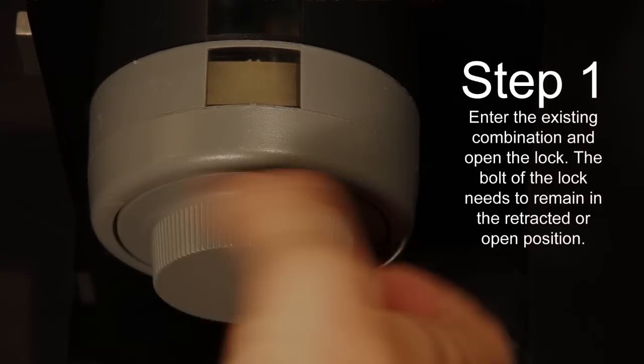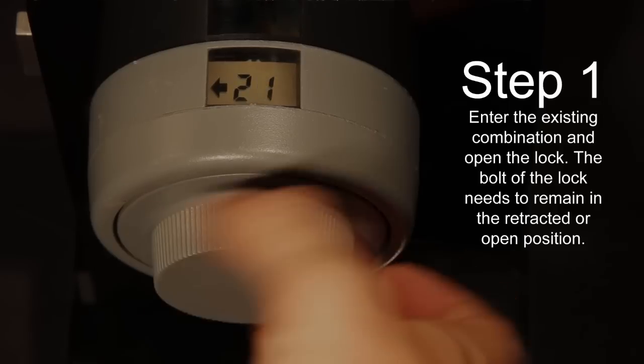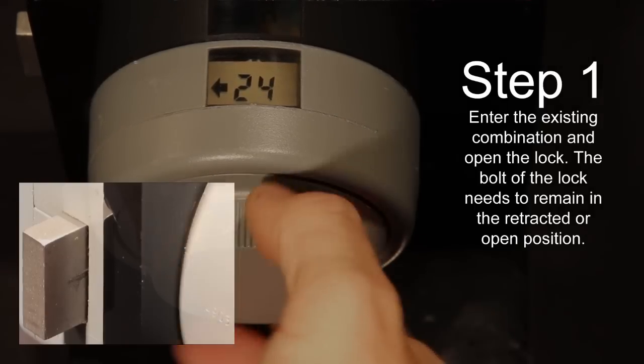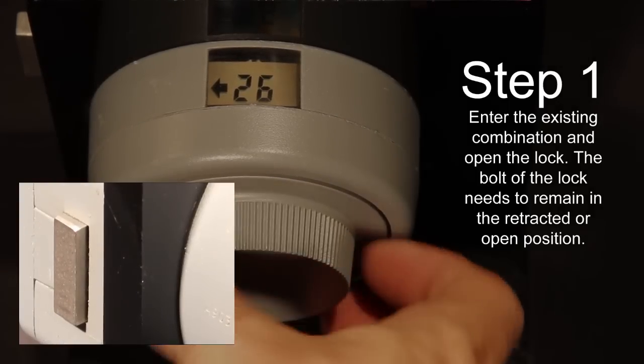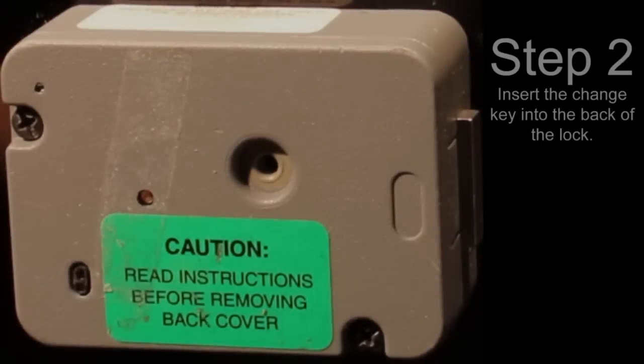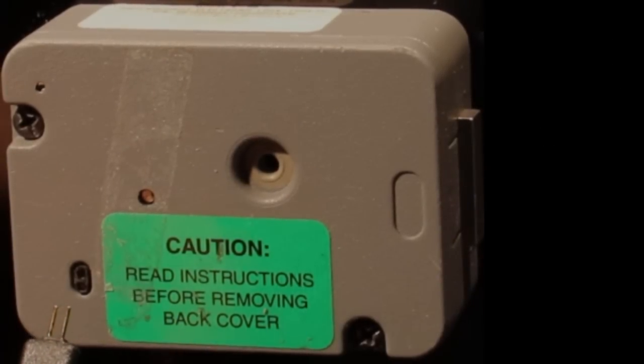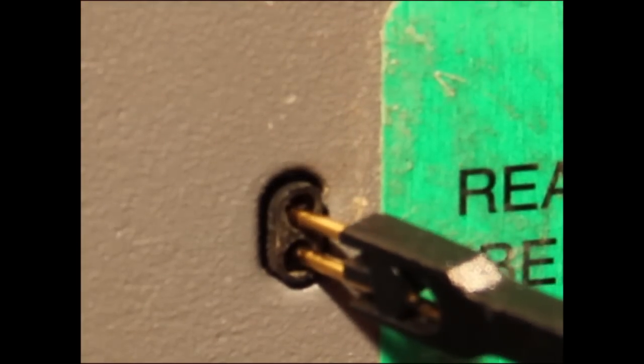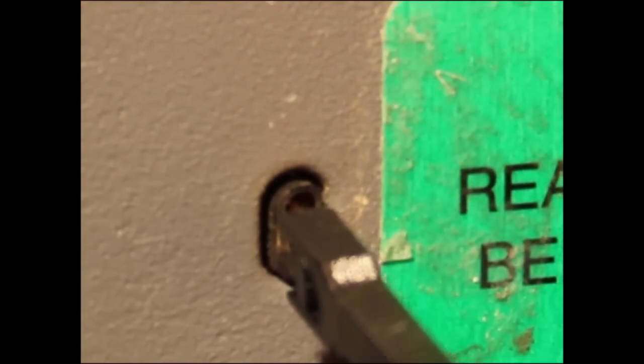To change the combination on your lock, begin by entering the existing combination and opening the lock. The bolt of the lock needs to remain in the open position. Next, you will insert the change key into the corresponding holes on the back of the lock. Your change key can be found with the owner's manual in a small plastic bag that originally came with your GSA approved container.